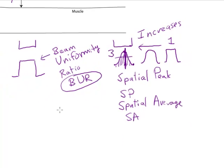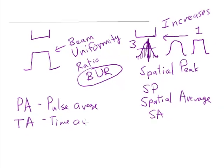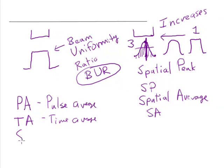So now we have the pulse average PA. We have the time average TA. We have the spatial peak SP. And we have the spatial average SA.